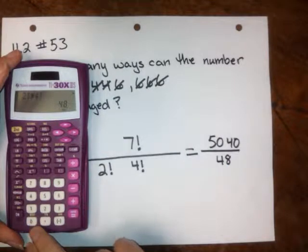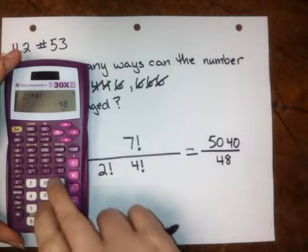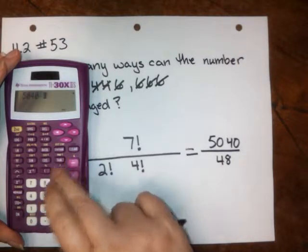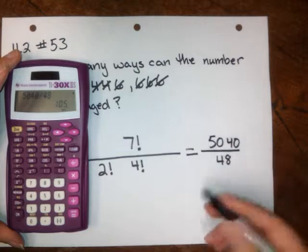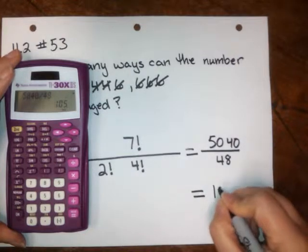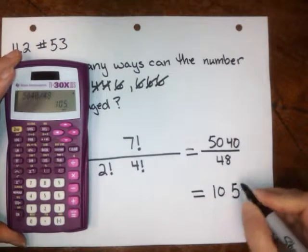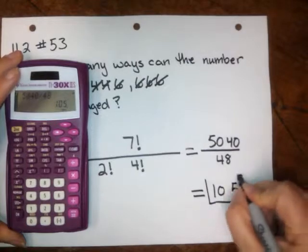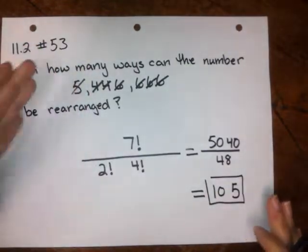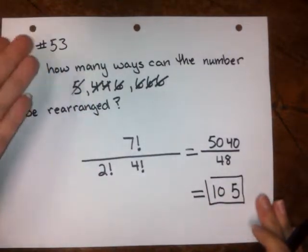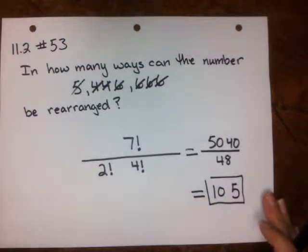And so now I do the division, 5040 divided by 48, and the answer that I get is 105. And that tells me how many ways that I can arrange the number 5,446,666.